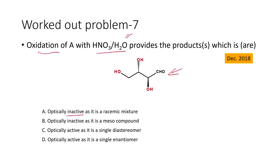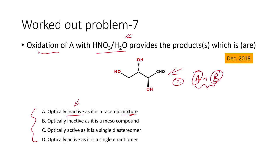There are three tasks: one, carry out the oxidation reaction; two, find the relationship between the different products formed; three, determine whether the products are optically active or optically inactive. There are four multiple choices: the products are optically inactive as a racemic mixture — two products A and B are formed and are optically inactive because one has positive rotation and the other has negative rotation.